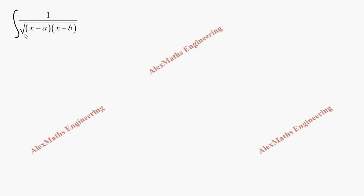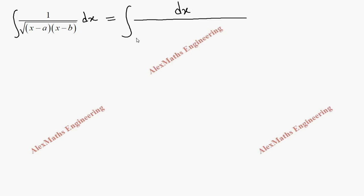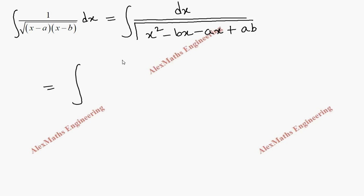Coming to the next problem, we have the integral of 1 by root of (x − a)(x − b) dx. The first step is to expand the denominator: (x − a)(x − b) = x² − bx − ax + ab, which gives x² − (a + b)x + ab.